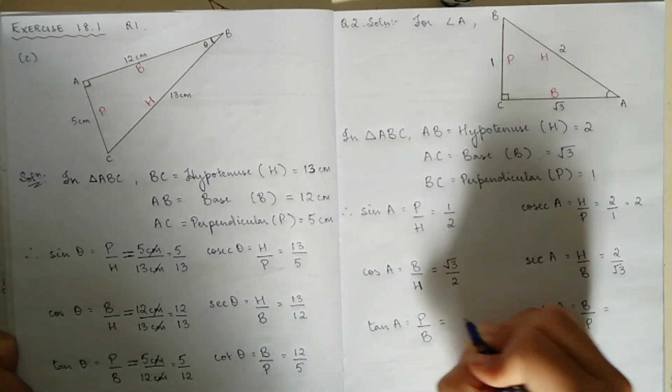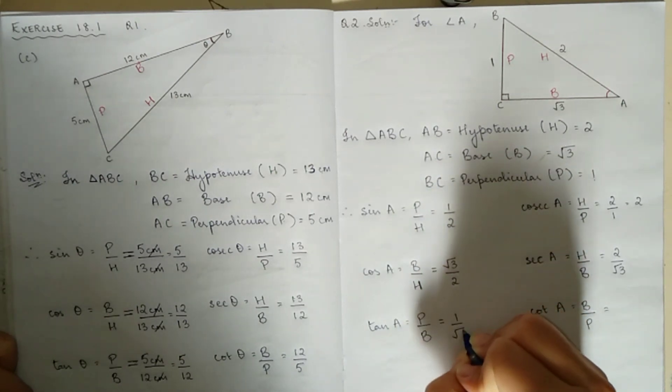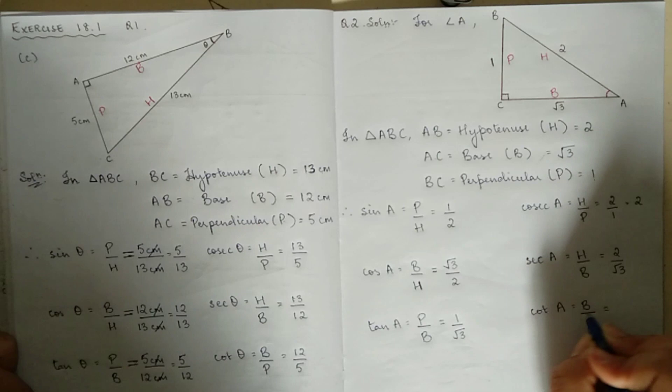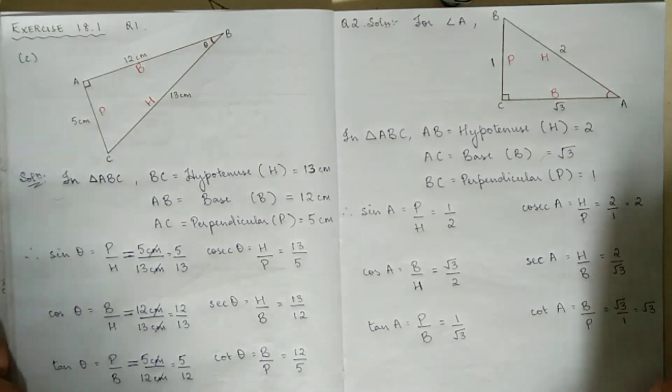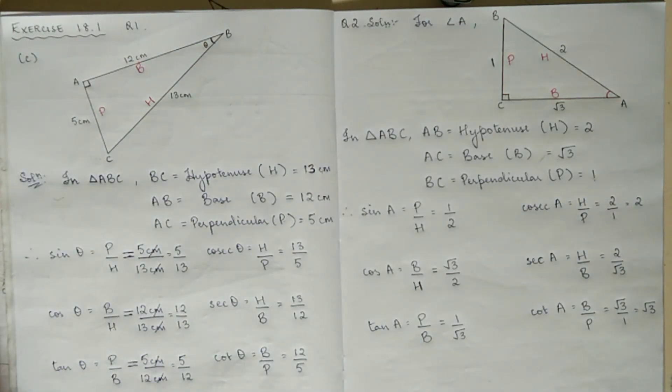Next, tan is P by B, which is 1 by root 3. So cot is B by P, which is root 3 by 1, same as root 3. That is basically it.